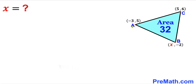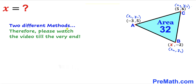Let me go ahead and label these vertices. I'm going to call vertex A as x1, y1, vertex B as x2, y2, and vertex C as x3, y3. In other words, our x1 value is negative 3, y1 value is 5, and so on. In this video I'm going to share two different approaches, so please watch the video till the very end.